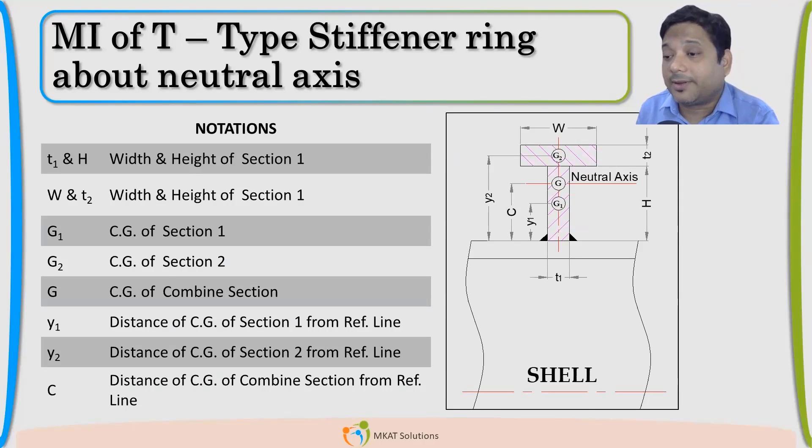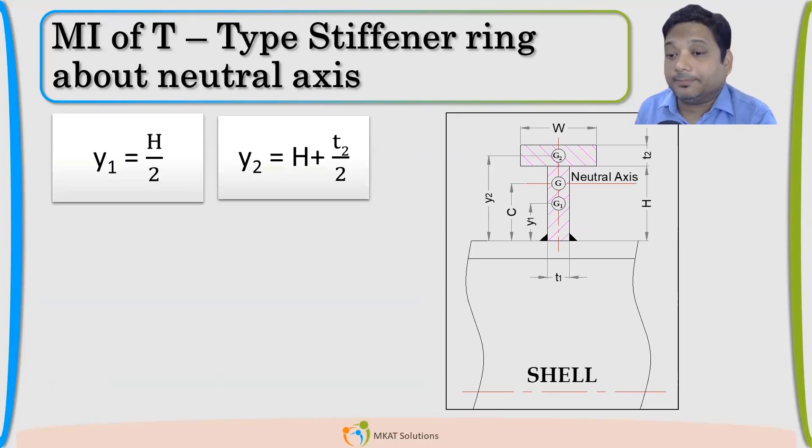That was very easy. If I have a single ring, a rectangular. Now, if I have a T section, then how I will be calculating the Moment of Inertia. First of all, I will be finding out the Y. That is the centroid of the first area Y1, centroid of the second area Y2. The name might feel a little confusing, but it is very simple term. Y1, how I will calculate? Y1 is nothing but H by 2. Y2, H plus T2 by 2. That is the Y2.